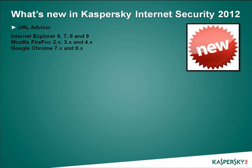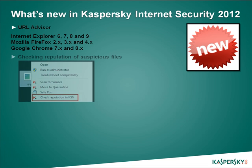Checking reputation of suspicious files. Now you can find out the reputation of any file with a single mouse click. To do this, right-click on the file icon and select 'Send Reputation to KSN' in the context menu. This is handy if, for example, you have downloaded a file from the internet but doubt its safety and want to quickly check its reputation.